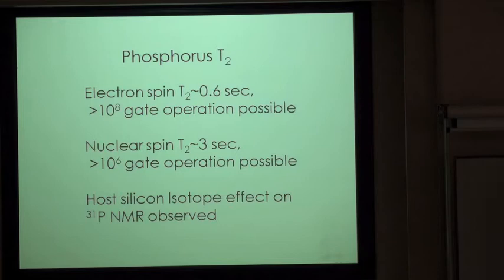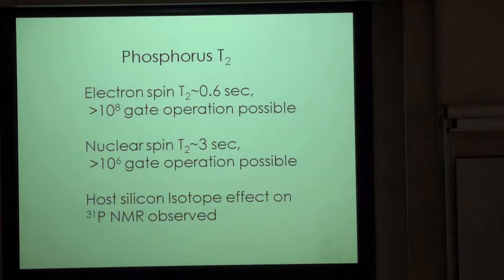To summarize up to here: electron spin T2 of phosphorus in silicon can go up to 0.6 seconds, within which more than 10^8 gate operations are possible. Nucleus spin T2 is 3 seconds. We have also observed an unexpected isotope effect on 31P NMR.